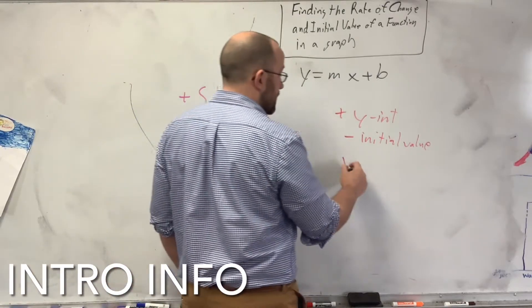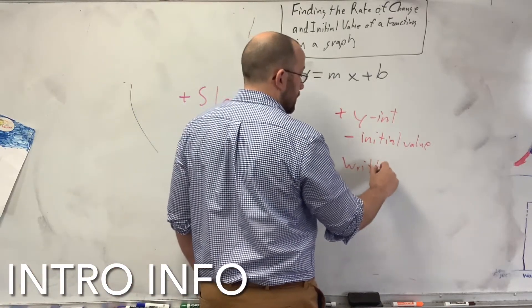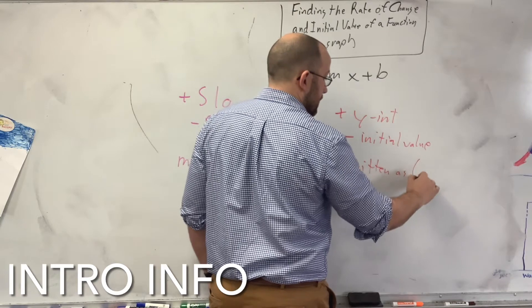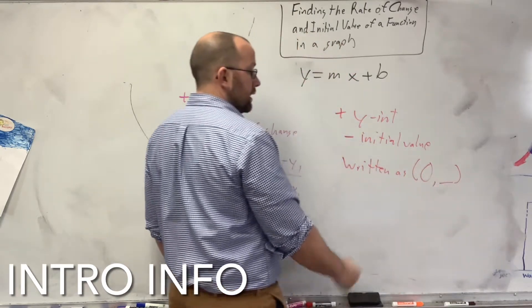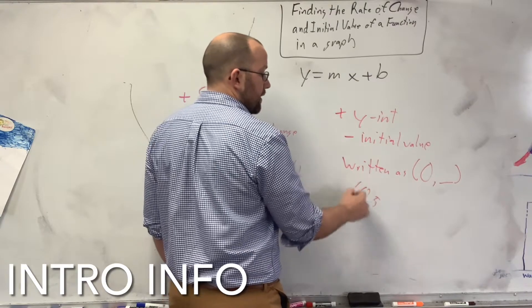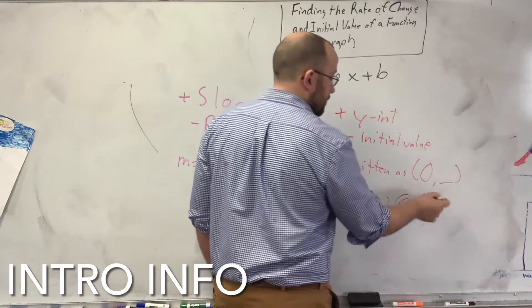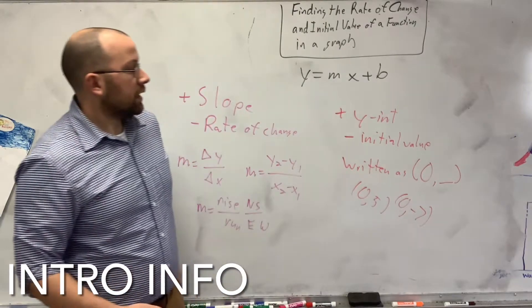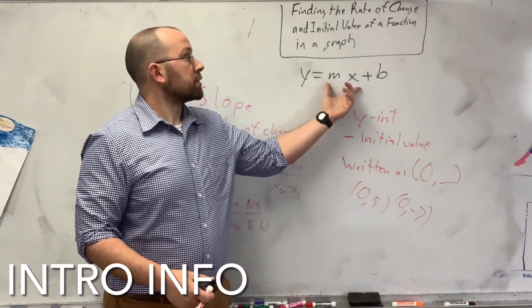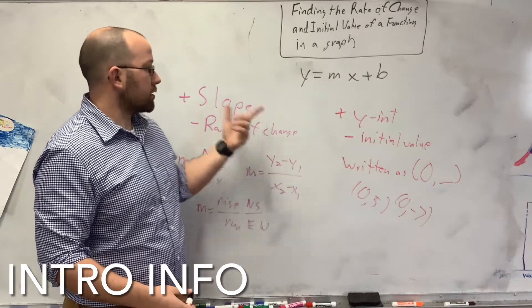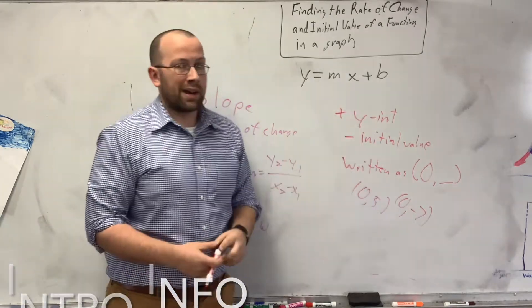This is always written as 0, then whatever the number is. So, 0, 5, or 0, negative 7, and so on. Those are the two big things that you need to know from the slope-intercept form. The rate of change is the slope. The initial value is the y-intercept.